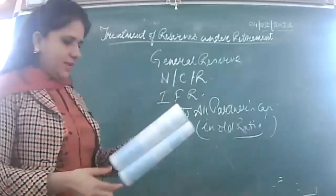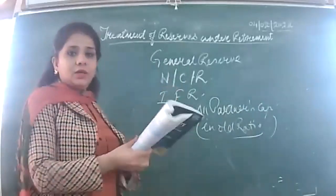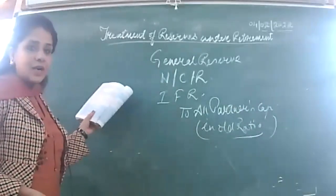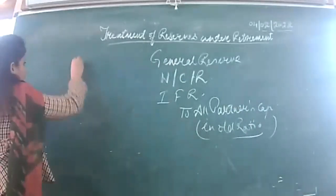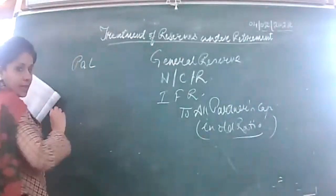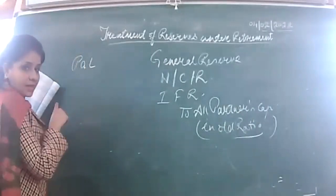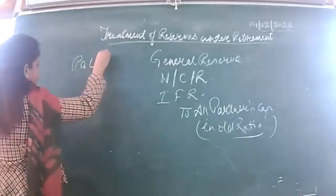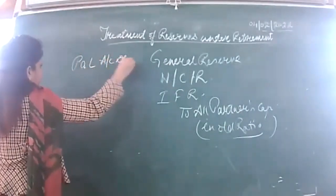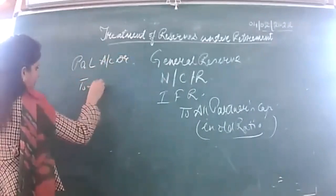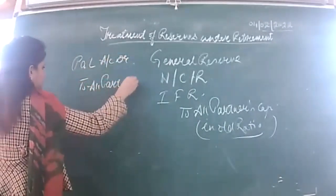We have example 20 related to this. If reserves are to be treated this way and if the P&L account balance is appearing — that is surplus — if it is on the liability side, then you have to distribute it to all partners' capital accounts.